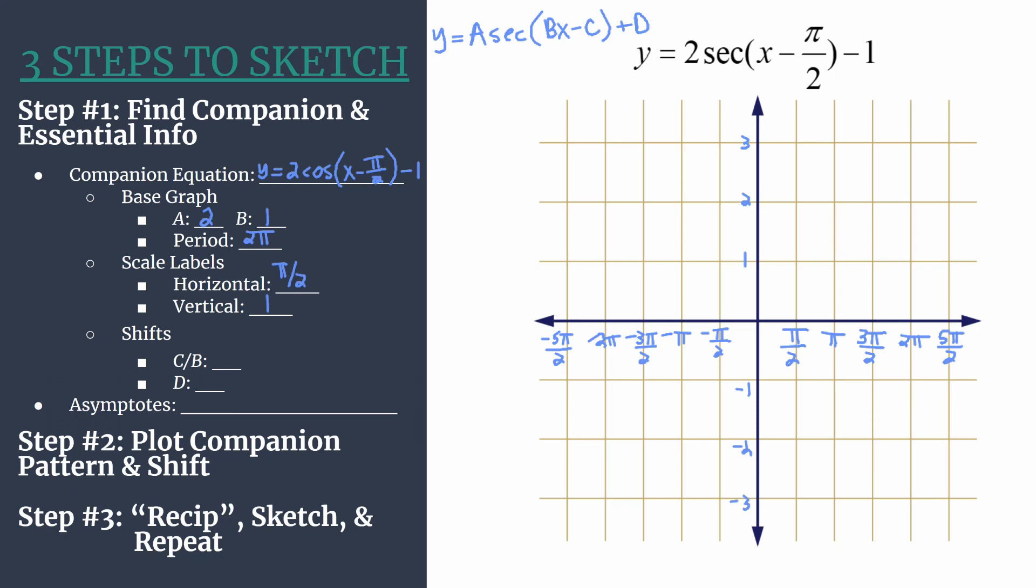Now we're going to dig into our shifts in more detail. A horizontal shift is actually going to be called a phase shift, and we find that using C over B. So remember C, check that sign, we have it the minus pi over 2, and so C itself is just going to be positive pi over 2. We know B is 1. So in this case, our phase shift is pi over 2. That means we're shifting pi over 2 units to the right. D is our vertical shift. We see that minus 1 at the end, so we know we'll have a vertical shift down 1.